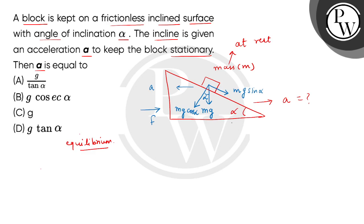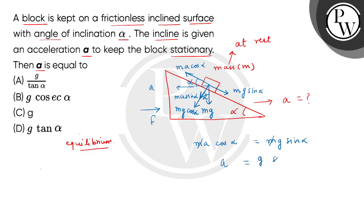Now for equilibrium, MA cos alpha must equal Mg sin alpha, since these are the important forces resisting sliding. M cancels on both sides, giving us A equals G sin alpha divided by cos alpha, which means A equals G tan alpha. So the correct answer is option D.